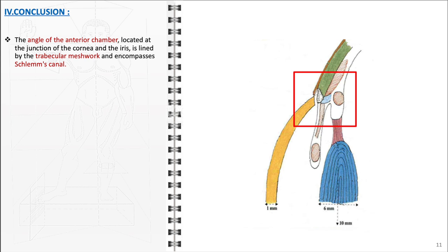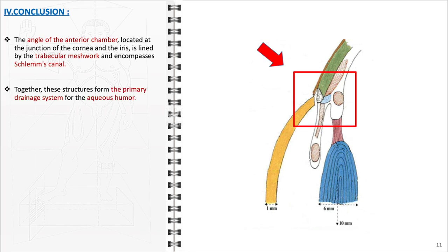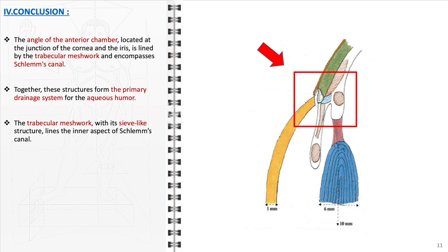In conclusion, the angle of the anterior chamber is a key anatomical feature at the junction of the cornea and the iris, crucial for ocular fluid dynamics and intraocular pressure regulation. It is lined by the trabecular meshwork and includes Schlem's canal, integral components of the eye's primary drainage system for aqueous humor. The trabecular meshwork, characterized by its sieve-like structure, lines the inner aspect of Schlem's canal, acting as a filter controlling the flow of aqueous humor into the canal and subsequently into the venous system. Its efficient functioning is vital for maintaining fluid balance and intraocular pressure stability.